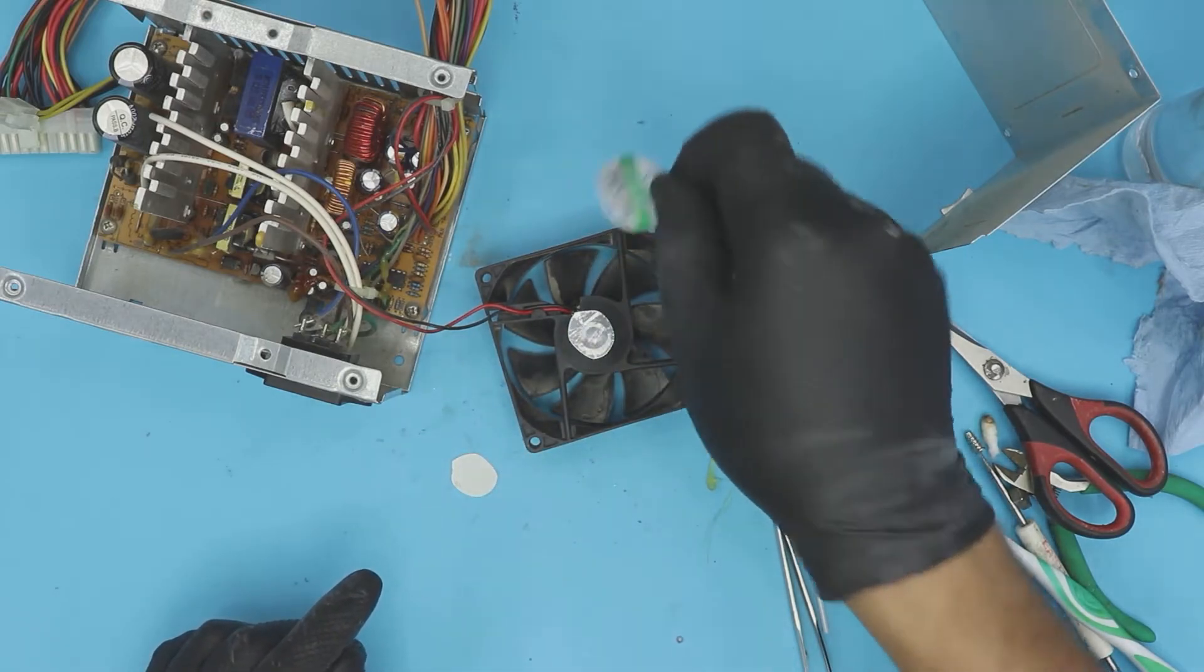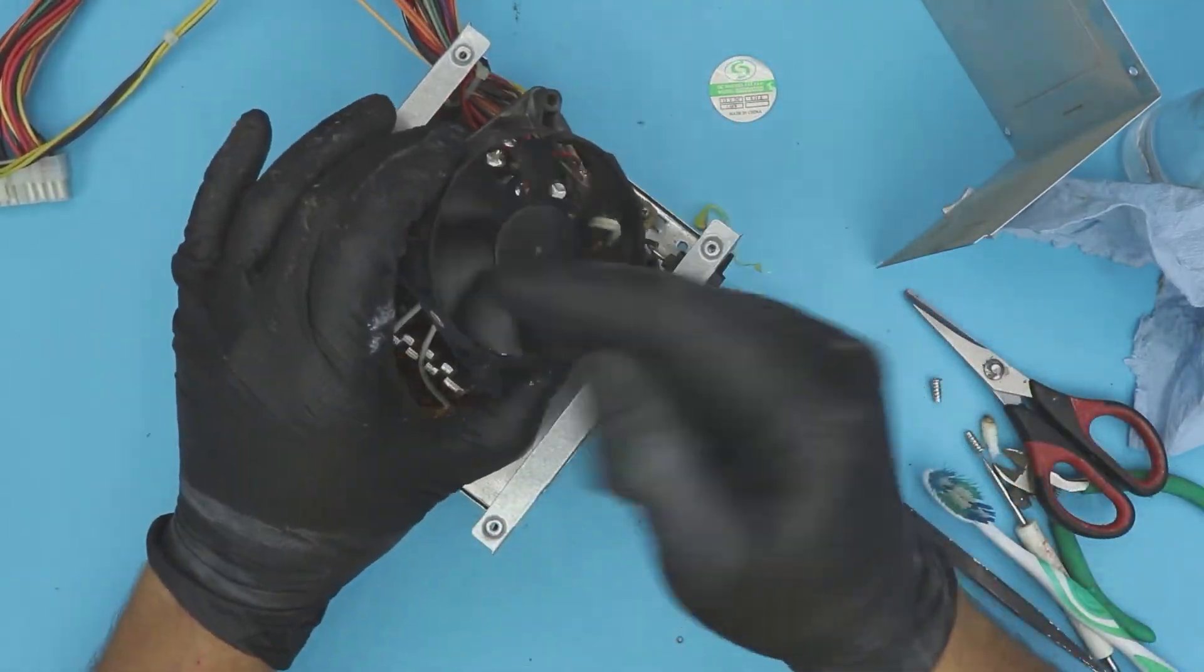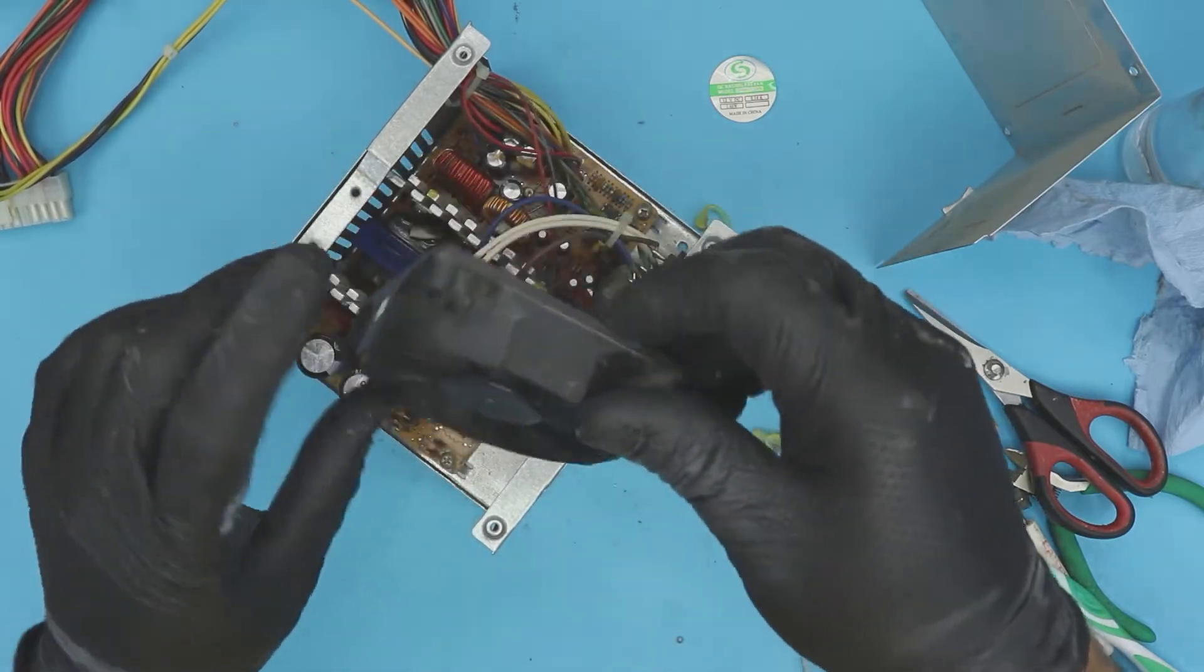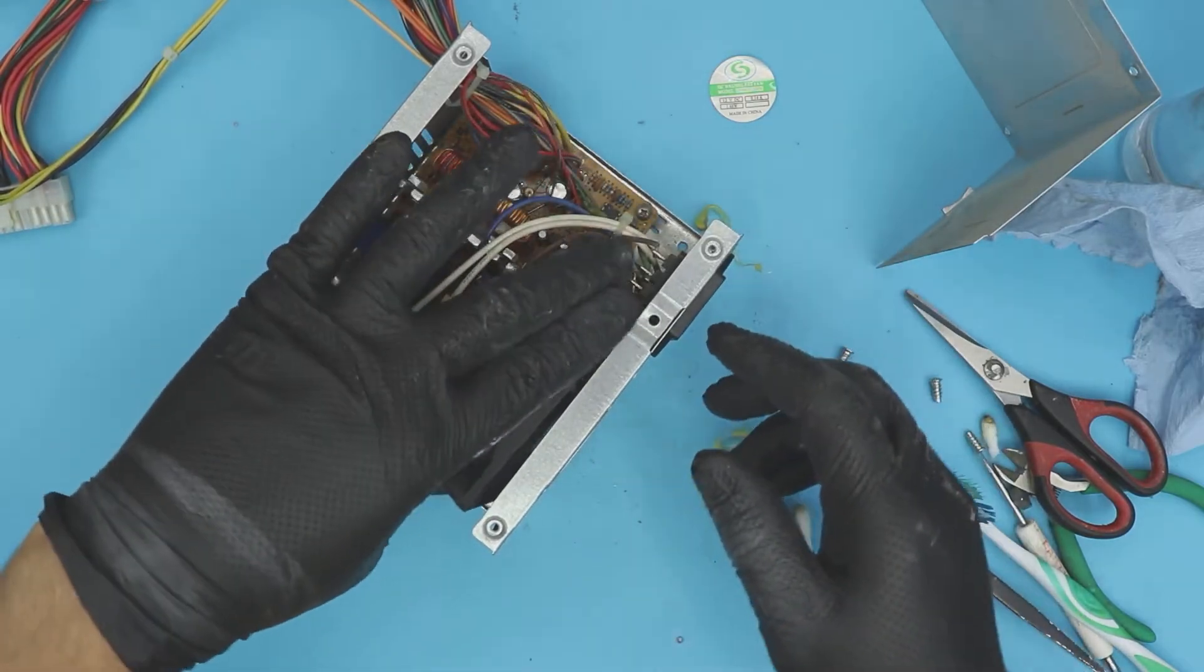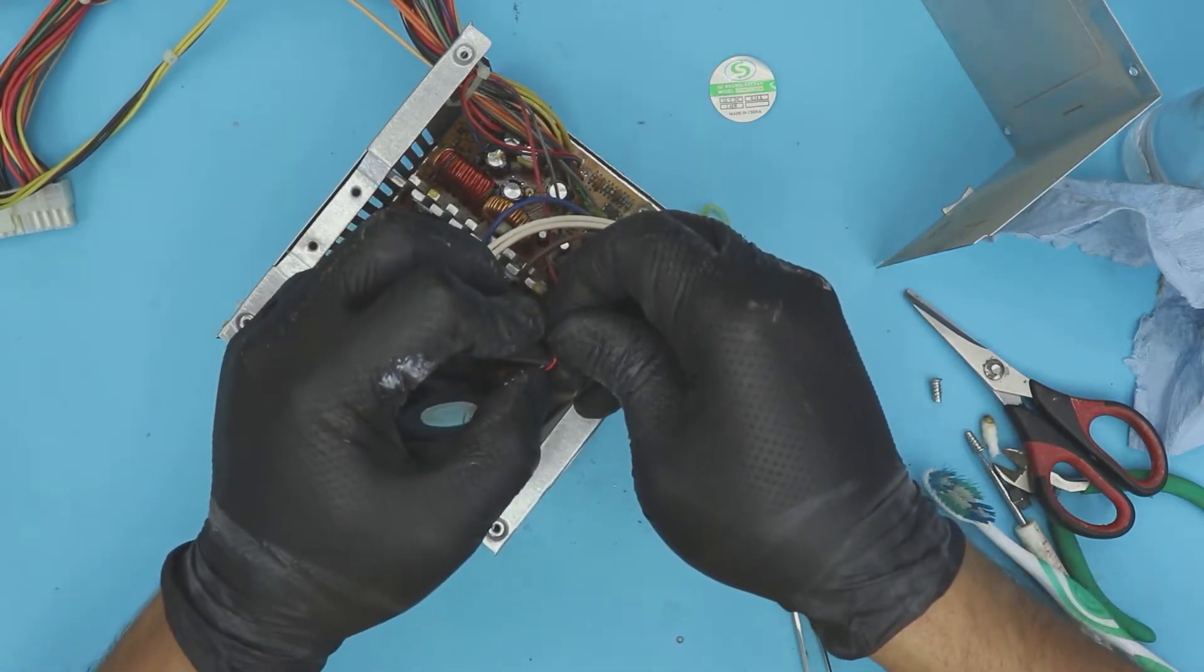You can take a picture of this one. That's the information: 12 volt, 0.14 amp, and the model if you want to change it. Now there is a new fan, nice and smooth. So now you save yourself a few bucks just by doing this.